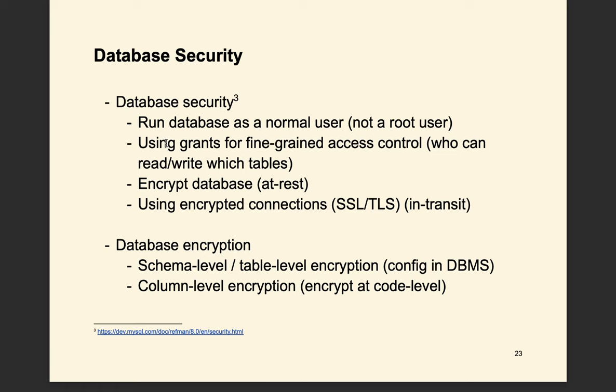In this video we're going to learn about encrypting data at rest. To encrypt a database there are several ways. The first option is to encrypt at the schema level or the table level — usually this is a configuration you set in your DBMS, and different DBMSs have different ways to configure it. The second option is column-level encryption, which is typically done at the code level before you write the data. Each option has its own advantages and disadvantages, so you need to choose the one most appropriate for your application.